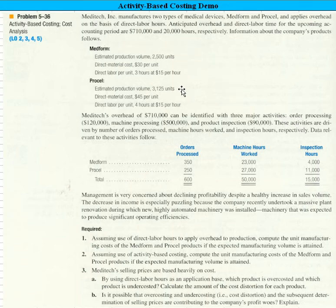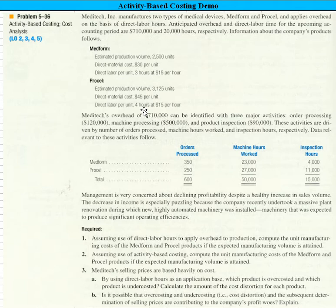We have a number of units: 2,500 and 3,125. We know that direct material cost for Medford is $30 and ProCal it's $45. It takes three hours at — I'm going to assume that is the average labor cost for the plant — of $15 to make Medford, and it takes four hours to make the ProCal product. They've also broken the $710,000 of overhead down into three activities: order processing, machine hours worked, and inspection hours. This table has the information we'll need to derive an activity-based costing approach.